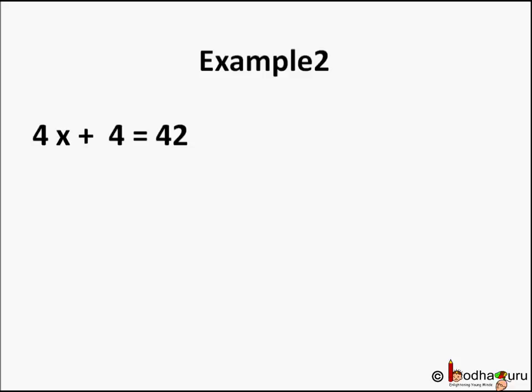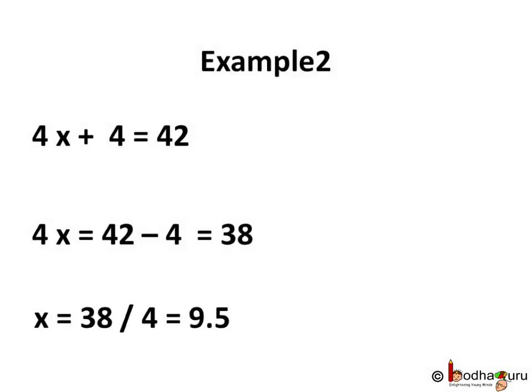So 4x plus 4 is equal to 42. 4x equal to 42 minus 4 which is 38. x equal to 38 by 4 which is equal to 9.5.